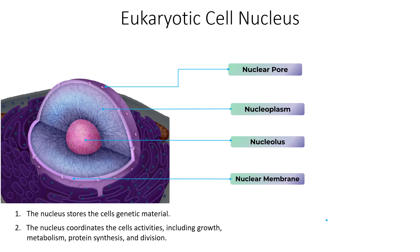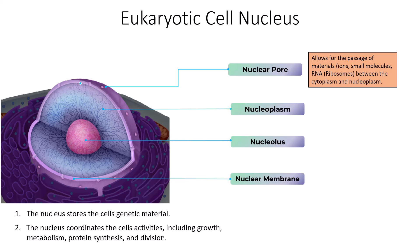The first of these structures would be the nuclear pores. The nuclear envelope has pores, called nuclear pores, that allow the passage of materials — which can be ions, small molecules, RNA like rRNA, specifically ribosomes — to get in and out between the cytoplasm and the nucleoplasm. The cytoplasm is the fluid inside the cell membrane but outside the nuclear envelope, and the nucleoplasm is the same type of substance but inside the nuclear envelope. These pores allow the passage of those materials in and out.